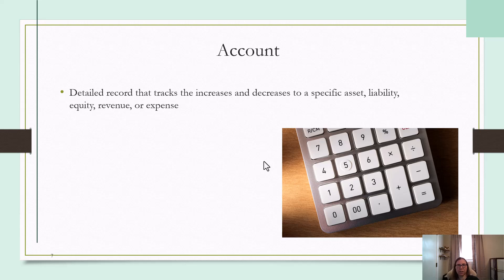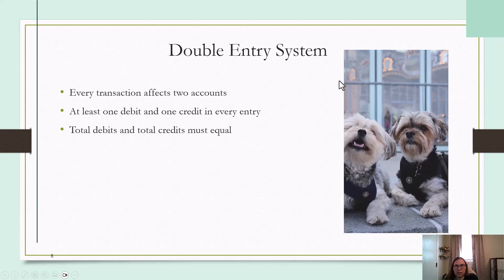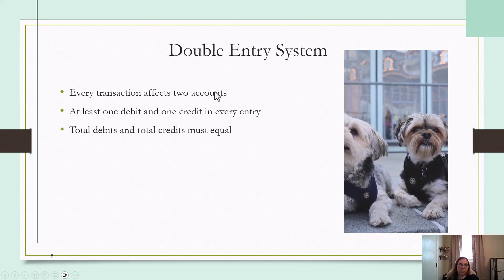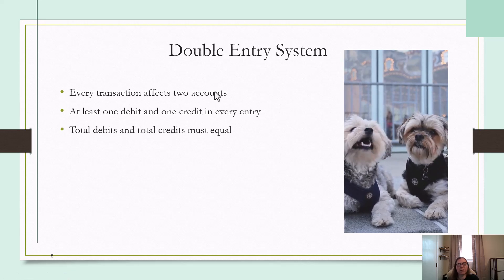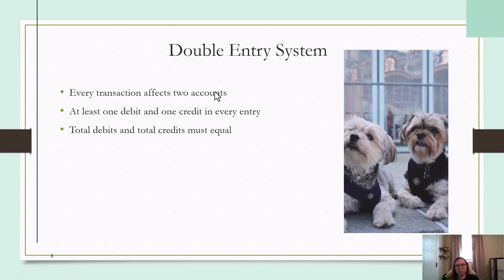This is going to be a theme throughout these lessons. In accounting, we have something called a double-entry system — every transaction affects at least two accounts. So there's going to be at least one debit and one credit in every entry. We'll get into what debits and credits are, and I'll do a lot of examples with that.